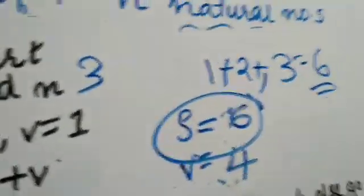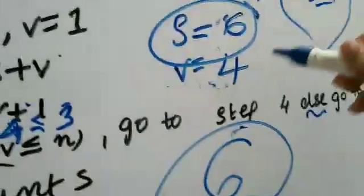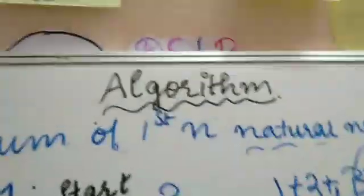Didn't we get the required output? Right? We got the required. So, this is the algorithm to find the sum of first n natural numbers. Hope you understood. Thank you.